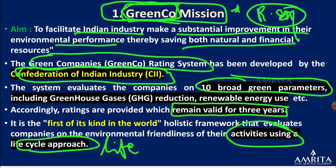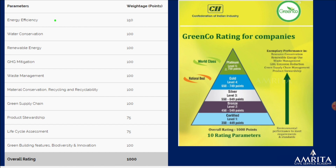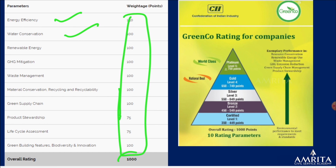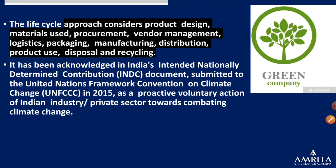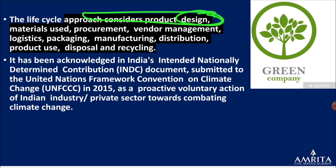The rating will remain valid for three years for a particular company. The 10 parameters are: energy efficiency, water conservation — weights are different, total weight 100 — GHG emission, waste management, green supply chain, product stewardship, and life cycle assessment. Companies will be arranged hierarchy-wise, similar to what NITI Aayog does with state rankings, creating a green branding for companies. Life cycle approach includes right from design to end cycling, disposal, and recycling. This Green Co rating system will help achieve INDC goals and other environmental commitments.